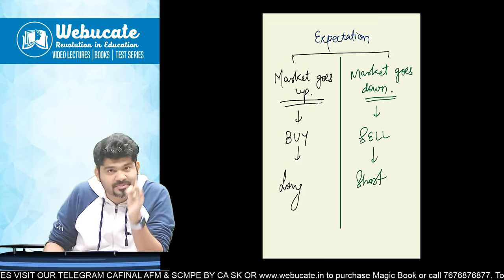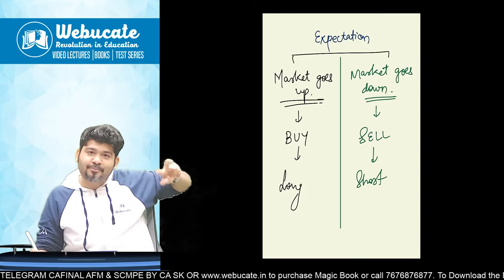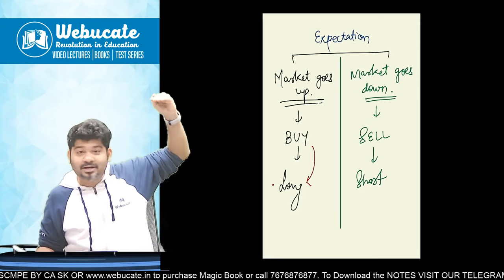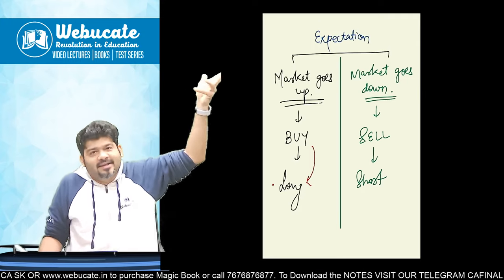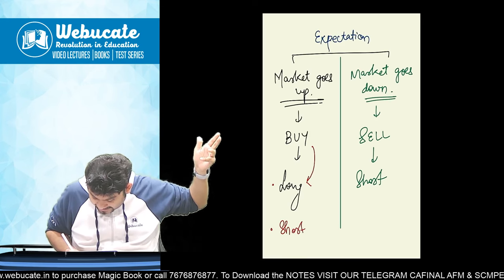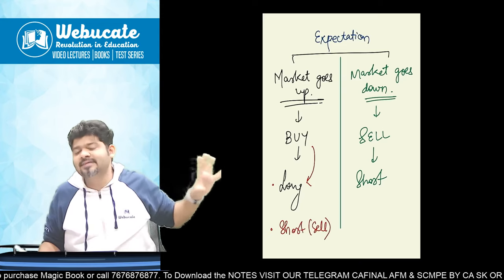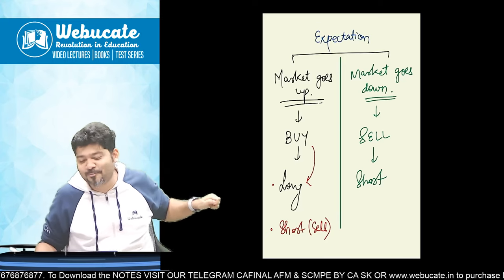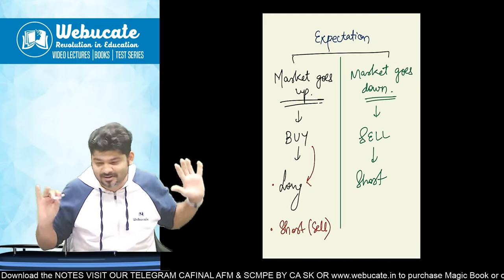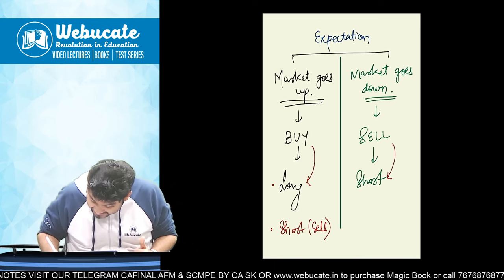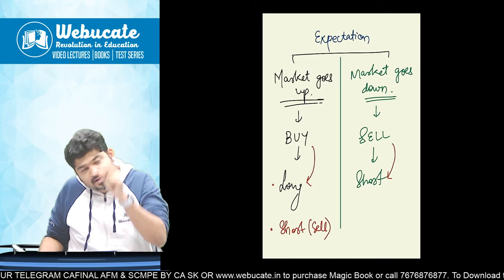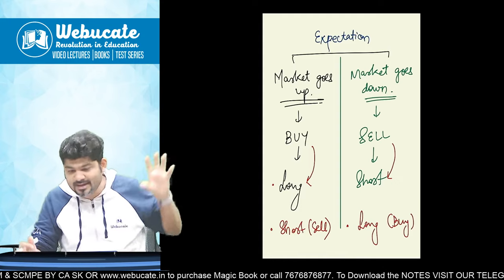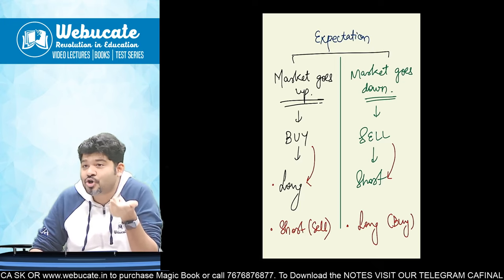In futures, always remember: whatever initial position you have taken, you need to take the opposite position in the future to close it. So if today you bought — meaning you went long — expecting the market to go up, and it actually goes up, then to offset you will go short, i.e., sell. That gives you a profit. But if the market went down, you still have to close by selling — but in that case you will incur a loss.